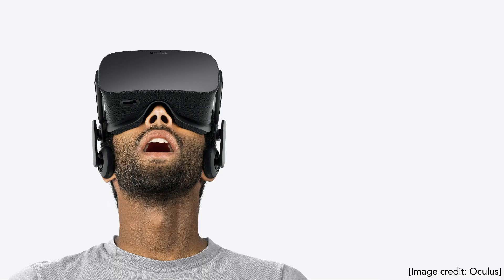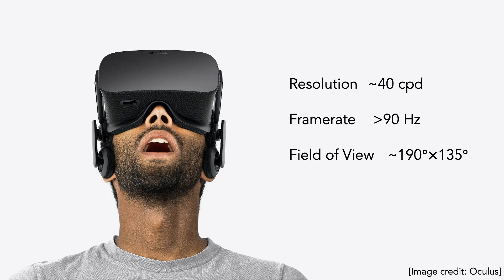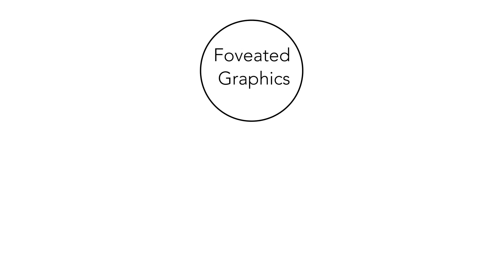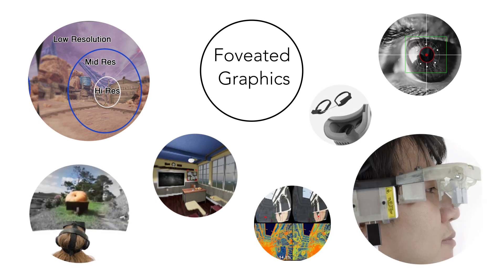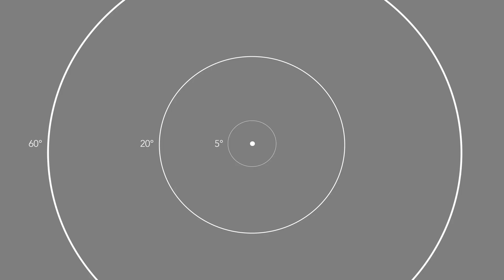Virtual and augmented reality displays strive to create immersive user experiences by providing a resolution, frame rate, and field of view that matches the perceptual capabilities of the human visual system. Foveated graphics approaches, including gaze-contingent rendering, shading, compression, and display have emerged as promising approaches, exploiting the well-known drop in acuity, or ability to resolve spatial detail, towards the periphery of our visual field to reduce resolution and save bandwidth. But what about the temporal resolution of our visual system?